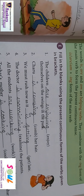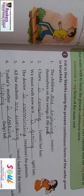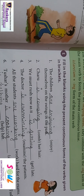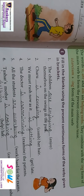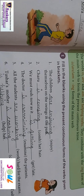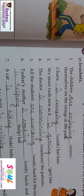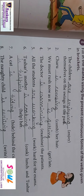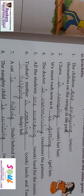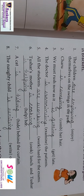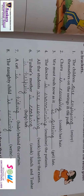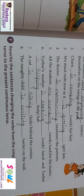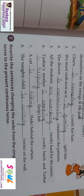Next: we must rush now as it is getting late. The doctor is examining the patients, and Tushar is helping her — Tushar's mother is cooking and Tushar is helping her. A cat is hiding behind the curtain — the cat is behind the curtain, behind the pardae. The naughty child is writing on the wall — ek shatan bachcha wall pe likh raha hai. So that means the action is still going on, it has not completed.